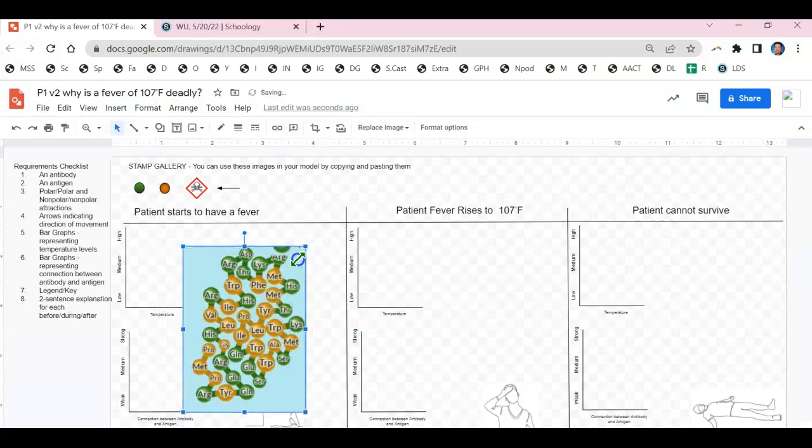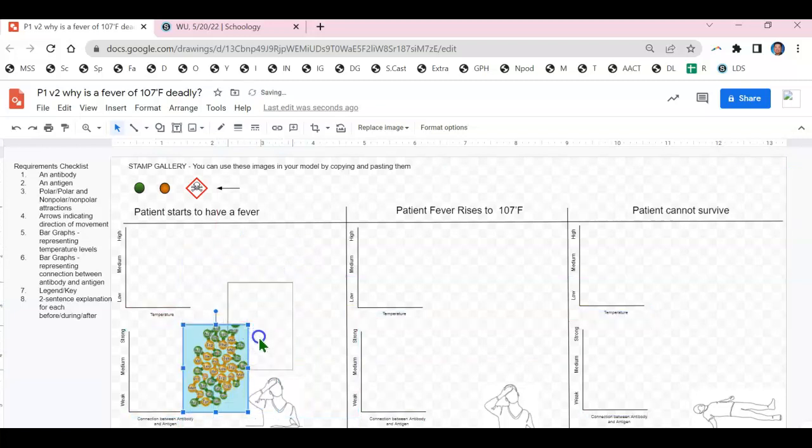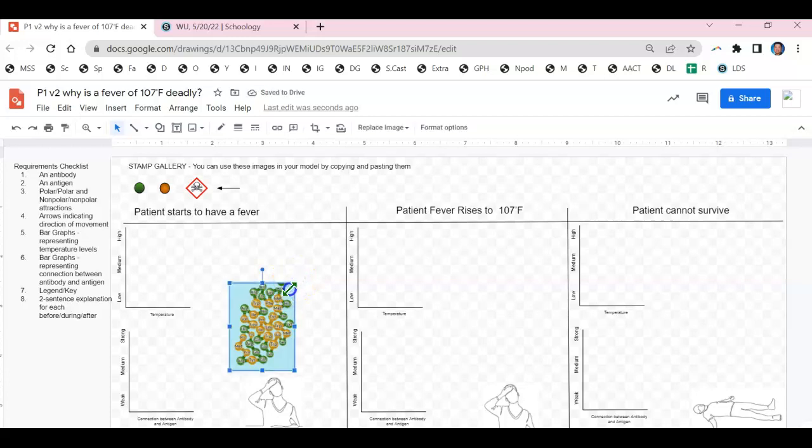Go ahead and shrink your protein so that it fits into your Google drawing with ample space above it. Next we need to draw the antigen that fits together with the antibody with a puzzle-like puzzle piece formation.